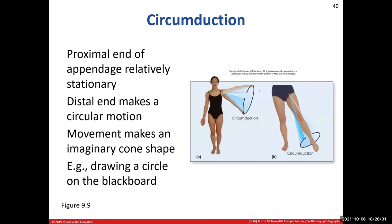Circumduction is like making arm circles — as in gym class warm-ups. The proximal end of the limb stays relatively stationary while the distal end traces a cone-like circular path. The proximal end is stable; the distal end makes that circular motion — that is circumduction.